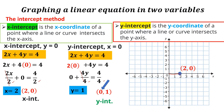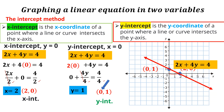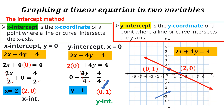Let's proceed to plotting the y-intercept (0, 1). And to proceed, let us connect the two points. This is already the graph of the equation 2x plus 4y is equal to 4.